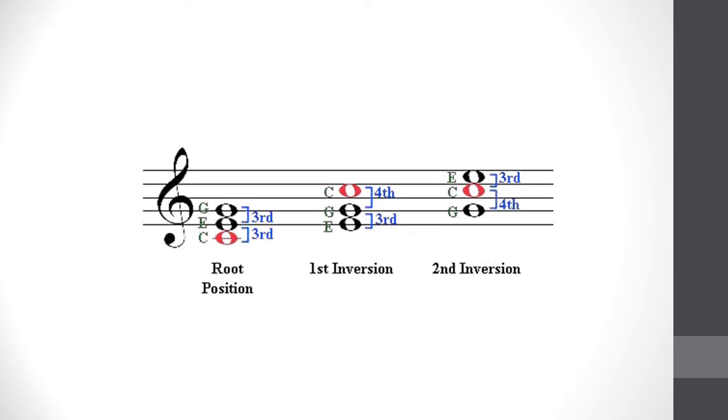The first and second inversion chords are made up of thirds and fourths. Knowing where the interval of a fourth is situated is very important. This will help you to determine the location of the chord's root.